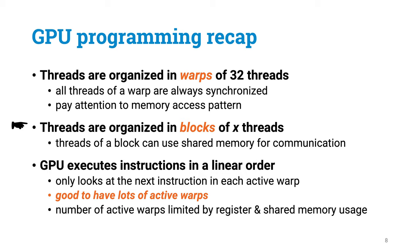You can allocate a small amount of shared memory for each block, and the threads can read and write this memory — just remember to synchronize properly to avoid data races. Finally, when reasoning about performance, keep in mind that the GPU executes instructions in a linear order. The CPU will look far ahead in the instruction stream to find something to do, but the GPU only looks at the next instruction in each warp. If it is not ready for execution, the whole warp will wait. So you will usually want to have lots of active warps, so that even if many of them are currently waiting, there is still useful work to do.